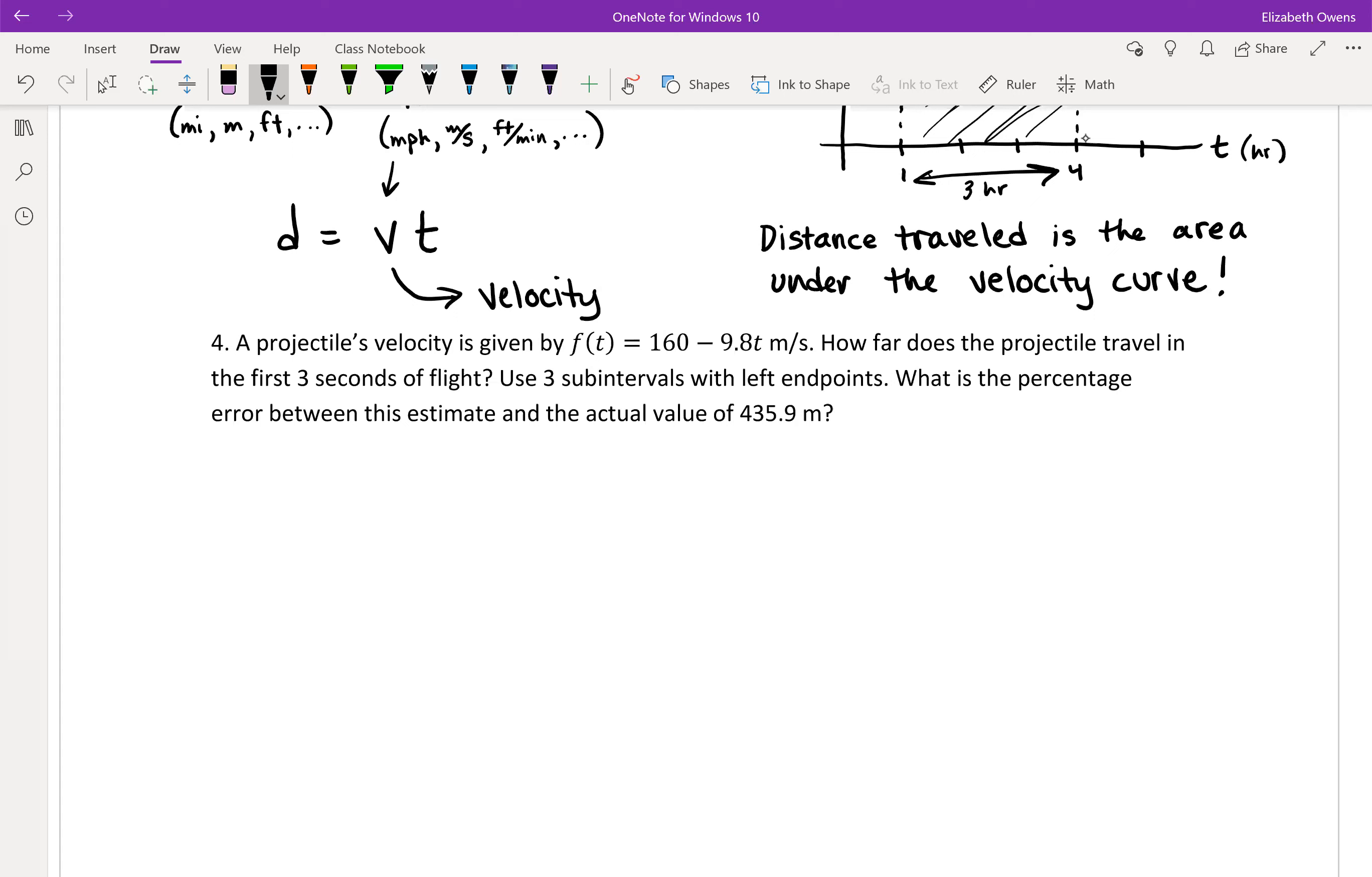Okay, so a couple things to break down here first. We are given a velocity function, so velocity, you could say this is v(t) or f(t), since they called it f in the problem here, 160 minus 9.8t meters per second. We want to find the distance traveled, so distance traveled which is the area under the velocity curve, area under v(t).